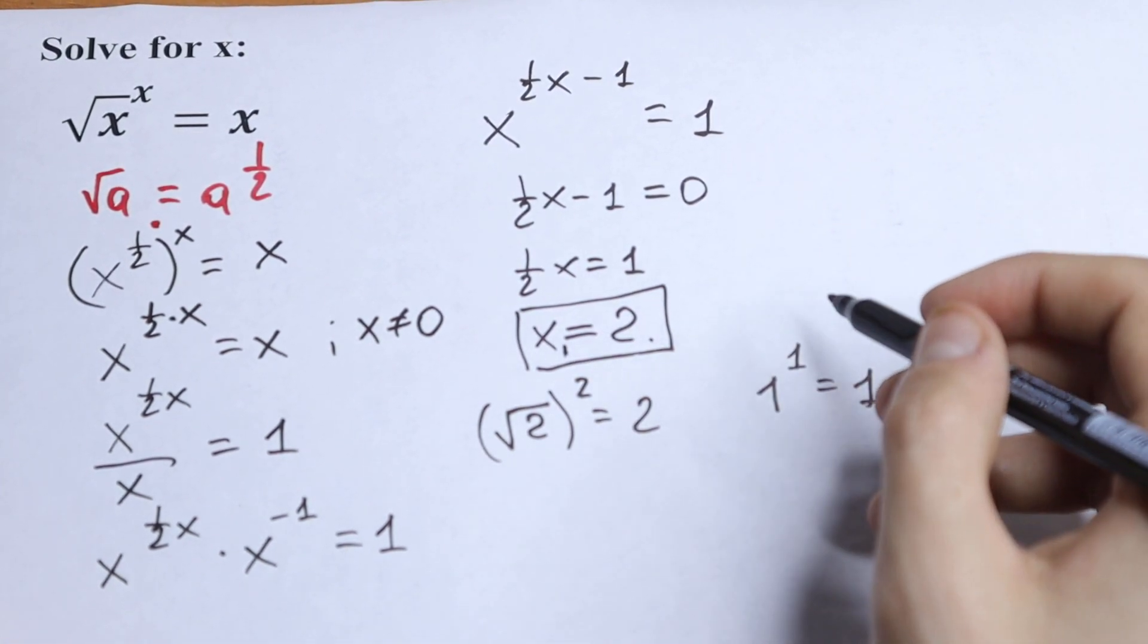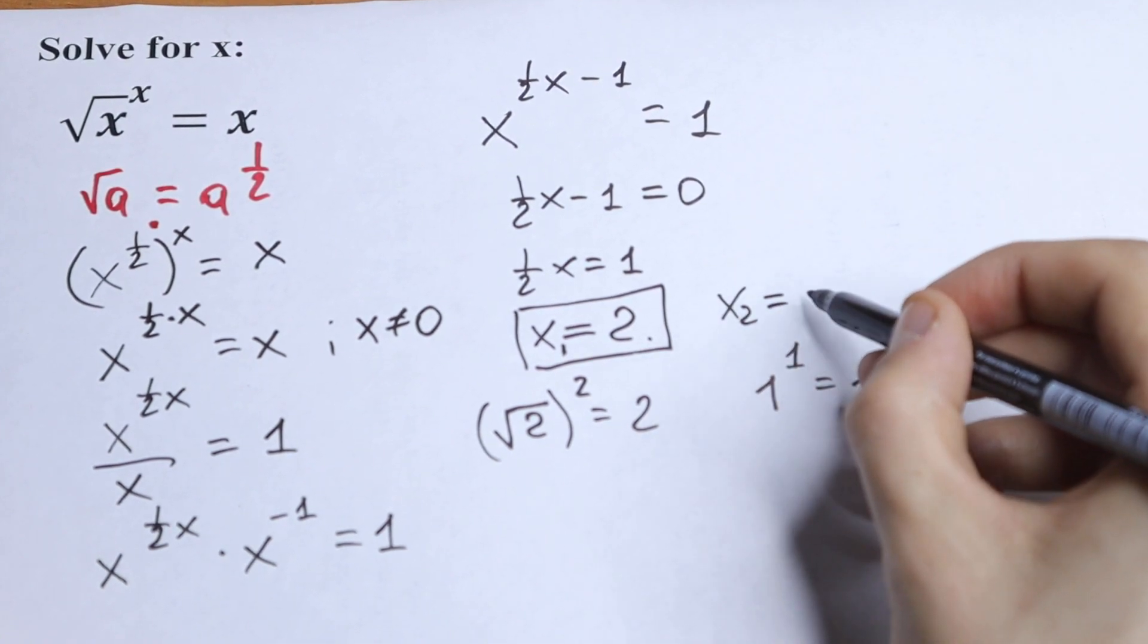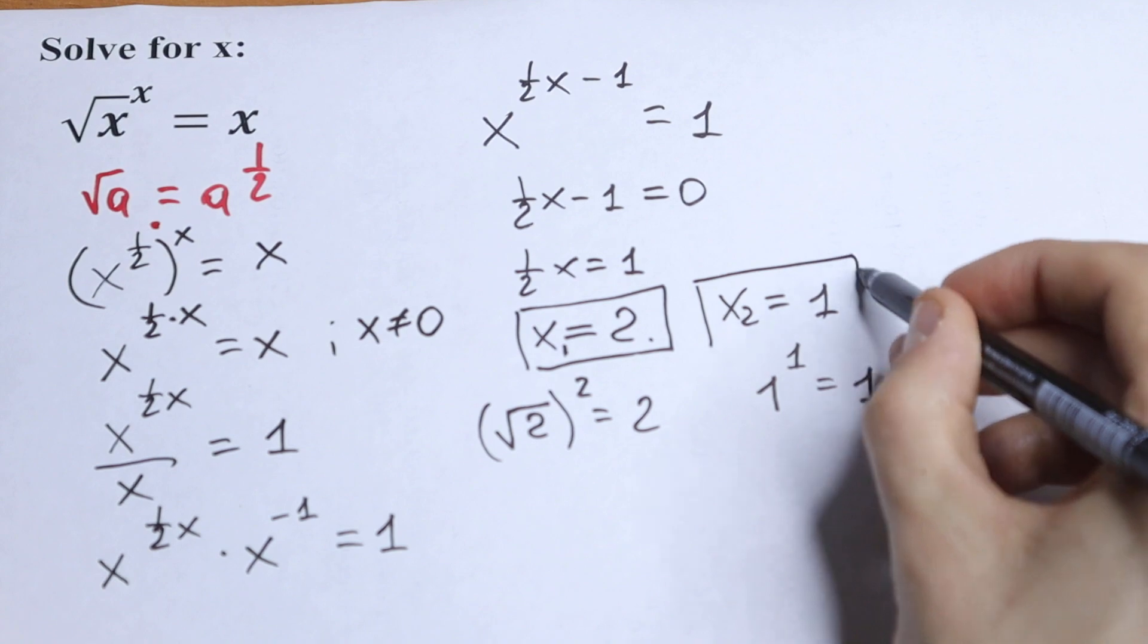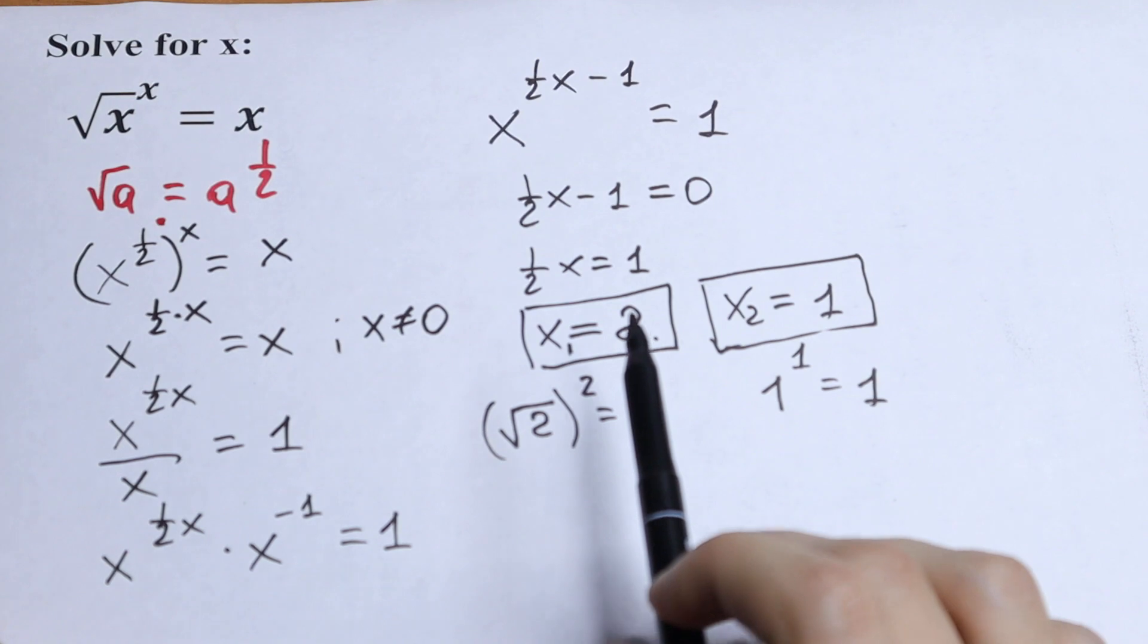So our first root will be x1 equal to 2, and our second root x2 equal to 1. And these are our two roots to this interesting exponential equation.